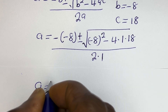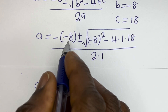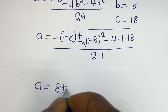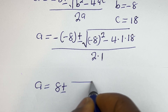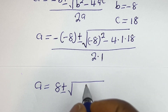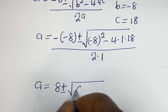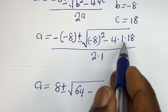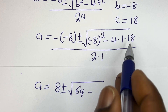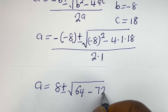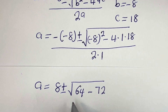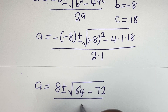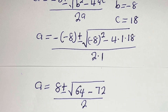This gives us a equals 8 plus or minus square root of 64 minus 4 times 1 times 18, which is 72, all divided by 2. So a equals 8 plus or minus square root of 64 minus 72, which is minus 8, all divided by 2.